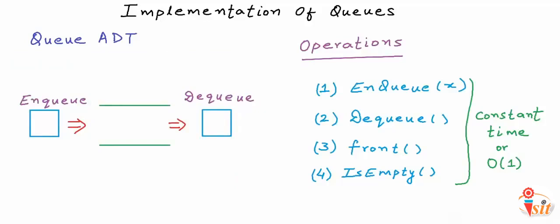I have defined the Queue ADT with four operations. In an actual implementation, all these operations will be functions. The front operation should simply return the element at the front of the Queue without removing any element. IsEmpty should check whether the Queue is empty or not. All these operations must take constant time — the time taken must not depend upon the number of elements in the Queue. In other words, the time complexity of all these operations must be O(1).